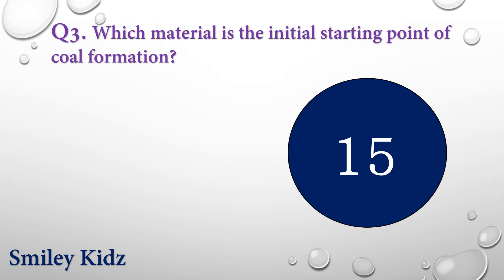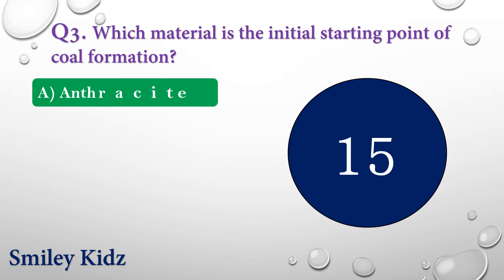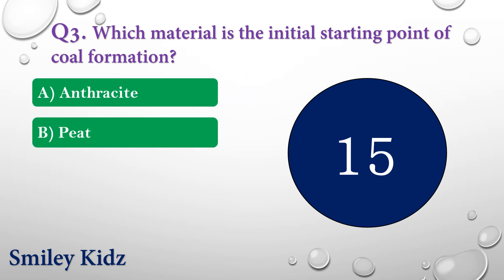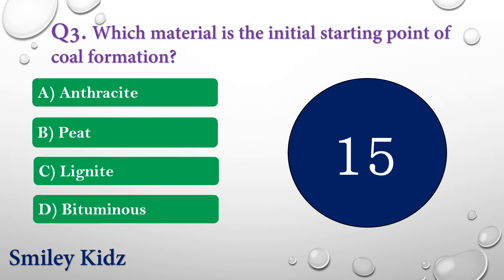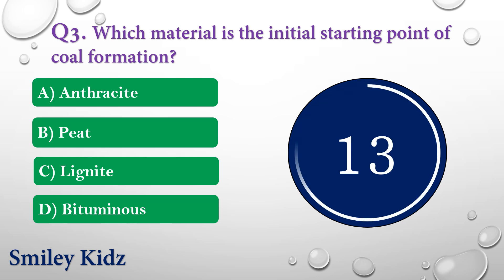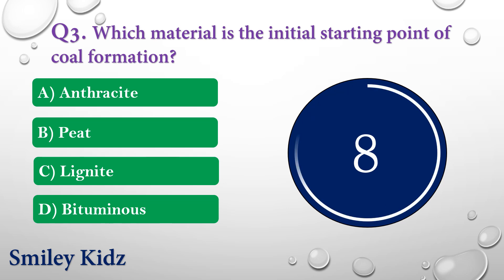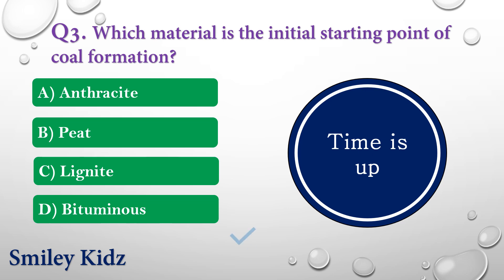Question number three: Which material is the initial starting point of coal formation? The options are: A) Anthracite, B) Peat, C) Lignite, or D) Bituminous. Your time is up and the right answer is option B — Peat. Peat is the initial starting point of coal formation.